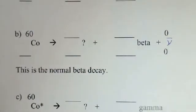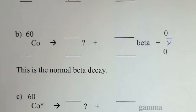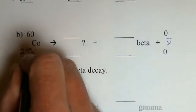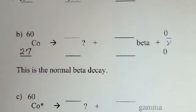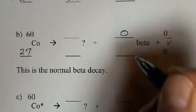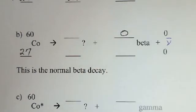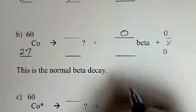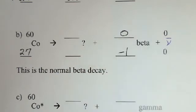And again, we go to our table. We find that cobalt has 27 protons. The beta, we've memorized, is not a proton or a neutron, it's an electron.